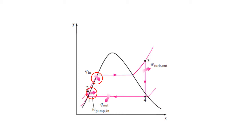It is this steam that we send over to our turbine, where we produce work, as shown by the work out here. Finally, we must repeat the cycle, which means we must turn the steam back into liquid water, sending it to a condenser where we have Q out. And the cycle repeats.